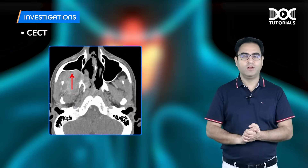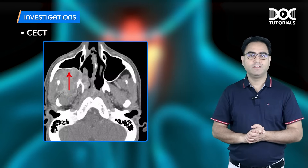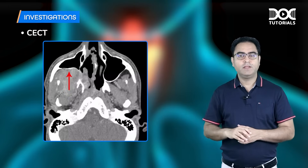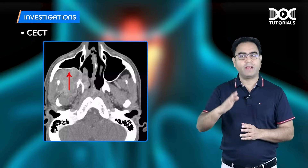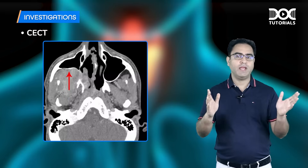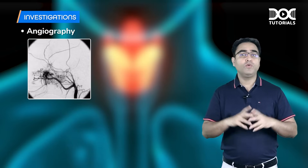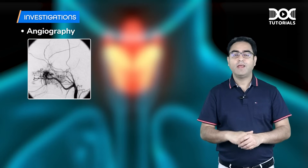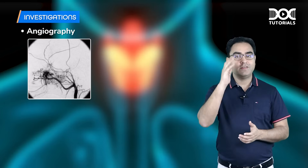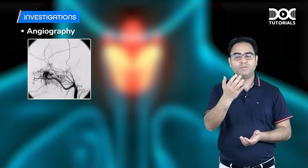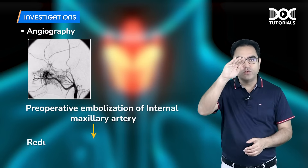On CT axial cut, the normal maxillary sinus is compared with the disease side, where the red arrow depicts the tumor pushing the posterior wall of maxilla forward — the Holman-Miller/antral sign. Number three is angiography, done to find the most common source of bleeding, which is the internal maxillary artery, as the tumor is majorly growing behind the maxilla. Pre-operative embolization of this artery will reduce blood loss during surgery.